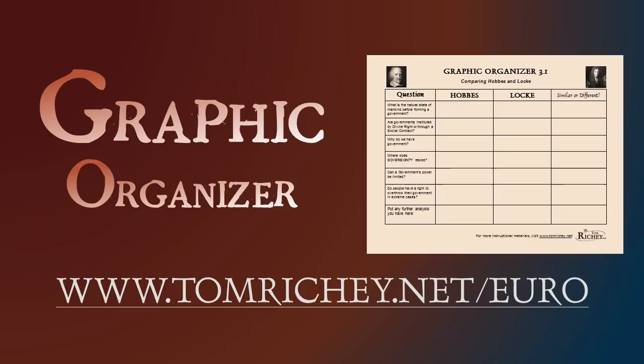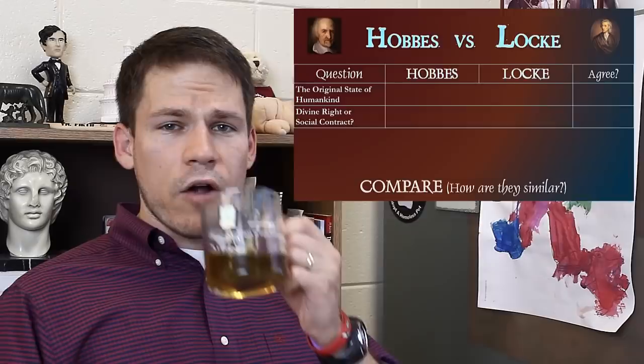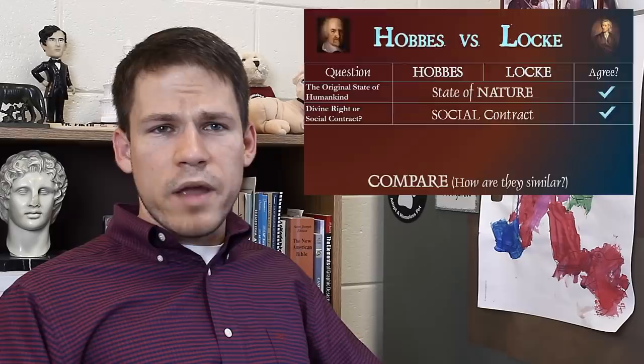It's graphic organizer time. You can download a copy from my website, www.tomritchie.net slash euro, or just follow along. We are going to compare and contrast Hobbes and Locke. When AP asks us to compare, they're asking for similarities. Both agreed that the original state of mankind was the state of nature — or the state of war, as Hobbes would call it — and both agreed that government is established by social contract rather than divine right. On those two points, Hobbes and Locke are in agreement.